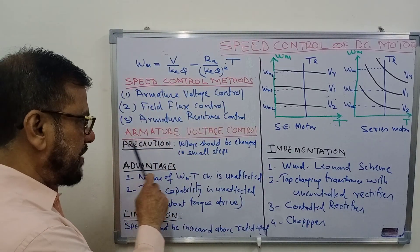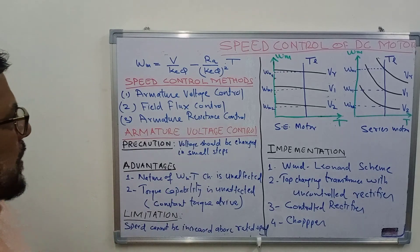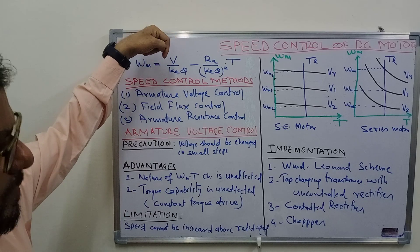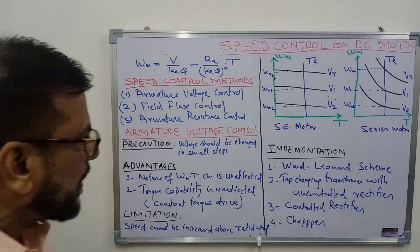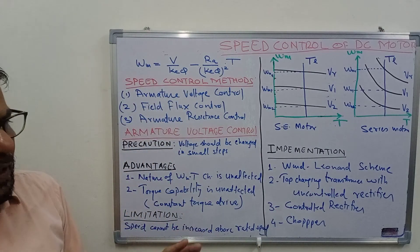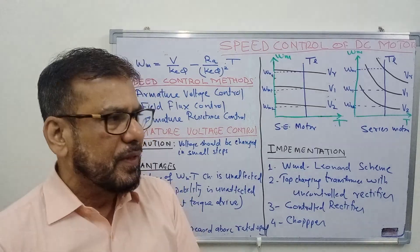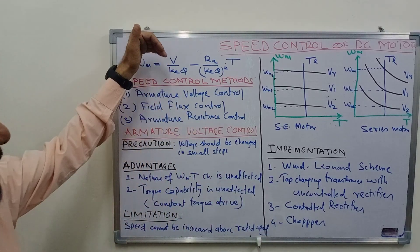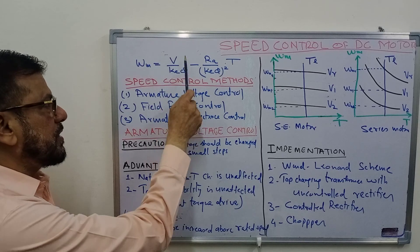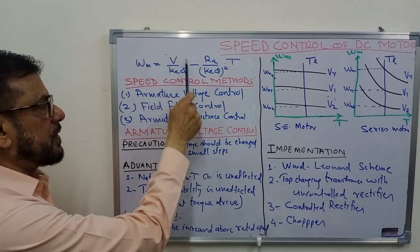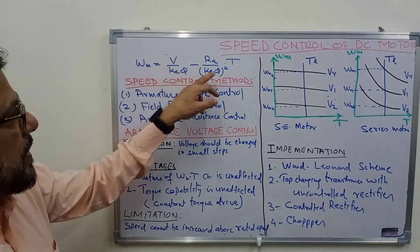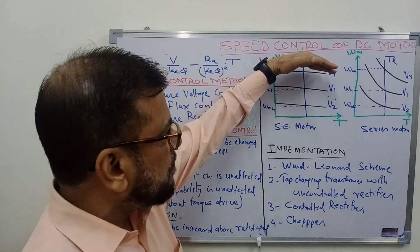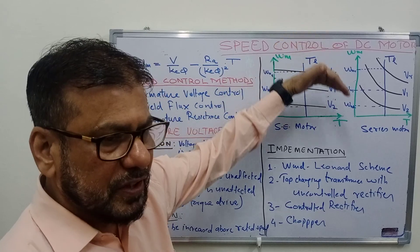The first method is armature voltage control. If we vary the voltage across the armature keeping the flux constant — by giving the field winding a separate supply — we only vary the armature voltage. From the equation, the no-load speed will change, but the slope of the characteristic is not affected, since Ra/Ke·φ remains constant. So the characteristic will shift parallel to itself downward if we decrease the voltage.